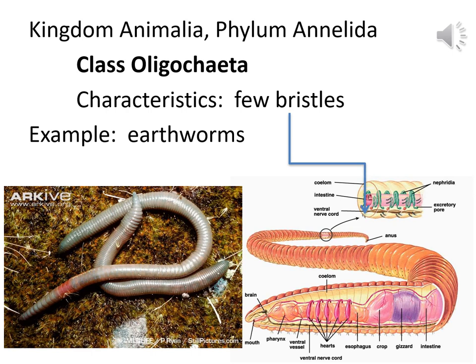Earthworms are in Kingdom Animalia, Phylum Annelida, and Class Oligochaeta. The characteristics of Class Oligochaeta — few bristles — go in the last rectangle on the row for earthworms. You can see the segments in the pictures. Earthworms also have a few bristles — tiny, almost microscopic things. If you look at the picture on the right very closely, you can see what looks like a little pair of hairs. They've only got about two bristles per segment. 'Oligo' refers to few and 'chaeta' is bristles, so Oligochaeta means few bristles.